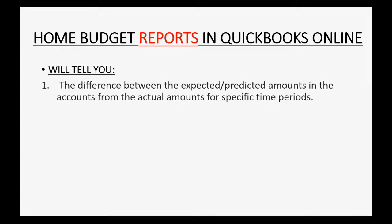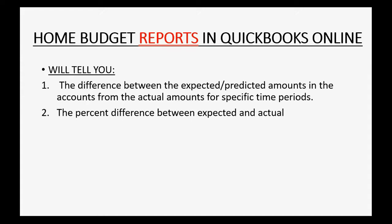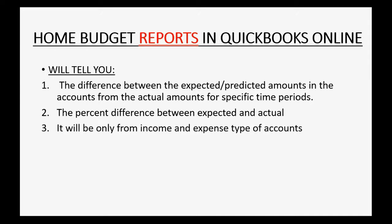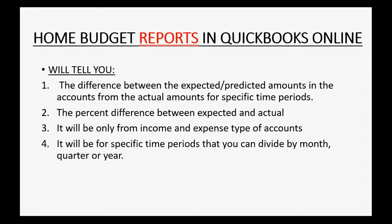The budget reports will tell you the difference between the expected or predicted amounts in the accounts from the actual amounts for specific time periods. They will also tell you the percent difference between expected and actual transactions. This applies only to income and expense type accounts, and it covers specific time periods that you can divide by month, quarter, or year.